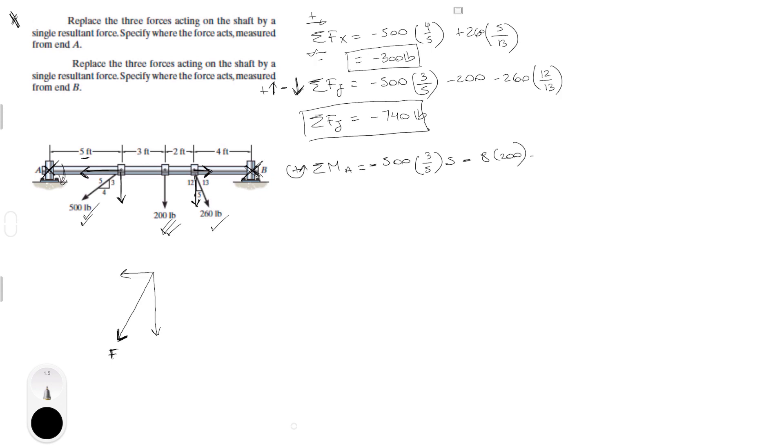And it's multiplied by the lever arm, which is 5 plus 3, which is 8 times 200. And the last one, which is the Y component of the 260 pound force, times 12 over 13. And you have to multiply it by 5 plus 3 plus 2, which would be 10. And it's also negative because it's turning the shaft clockwise, so trying to turn the shaft clockwise. When you add this all up, you get that this is equal to minus 5,500 foot pounds.